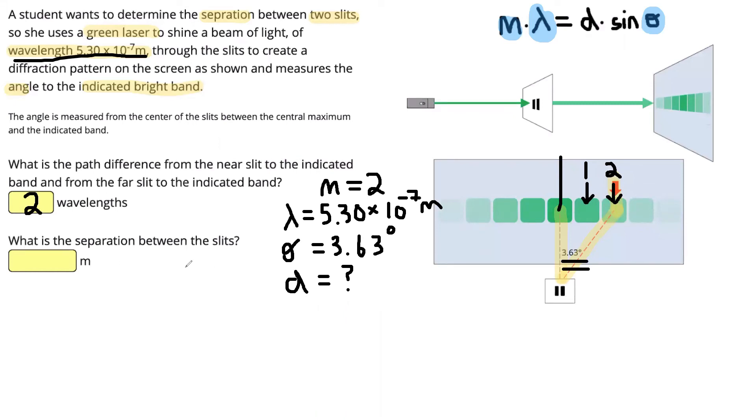And finally, to find the separation between the slits, we're firstly going to need to rearrange our equation to get D as the subject. Then we can substitute in our numbers and solve to find the separation. So let's rearrange our equation first.